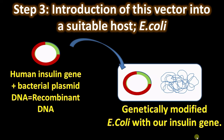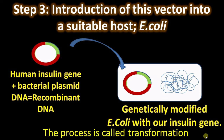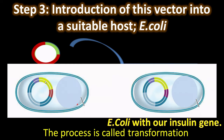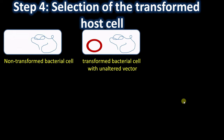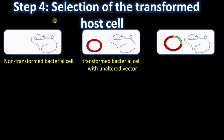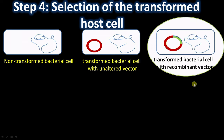We have the recombinant vector with A gene in one culture and the recombinant vector with B gene in the second culture. Step four: selection of transformed host cell. After the transformation experiment, we will have three types of colonies: first, the majority will be non-transformed bacterial cells; second, transformed with unchanged vector; and third, transformed with the recombinant vector — this is the colony we need to select.